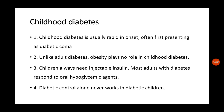Unlike adult diabetes, obesity plays no role in childhood diabetes. A child with diabetes will look very thin and emaciated, whereas in adult Type 2 diabetes the person will be obese and overweight.